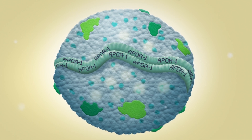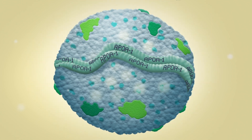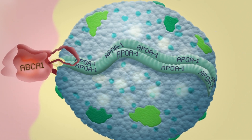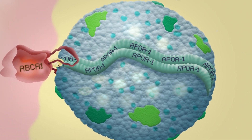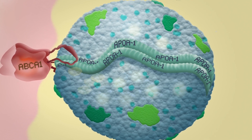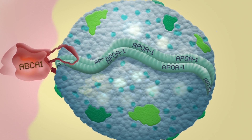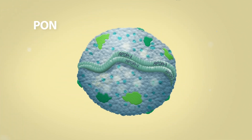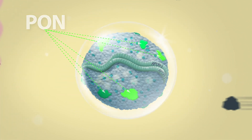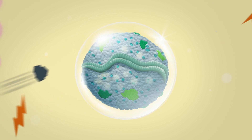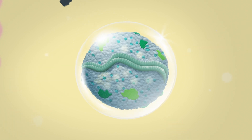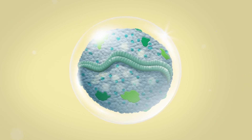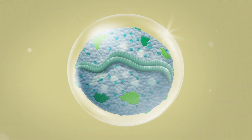An HDL particle is comprised of many proteins which are critical for proper HDL function. The protein ApoA1 on the surface of HDL interacts with cholesterol transporters such as ABCA1 on cells such as arterial foam cells, facilitating cholesterol loading into HDL particles. Another protein on the surface of the HDL particle, PON, acts as a shield to protect it from stressors in the environment. When these proteins are healthy, HDL particles function the way they're supposed to, and protect the cardiovascular system.